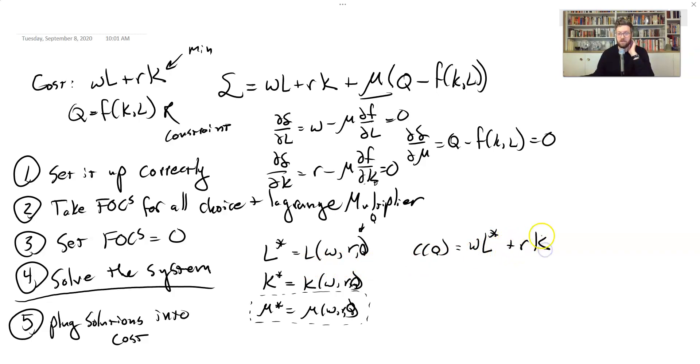And we have R times K. And again, we know exactly how much we should hire. And what we end up with is a function that looks, if we were to sort of write everything out, it's going to depend on W, R and Q. And this R is going to also depend on W, R and Q.